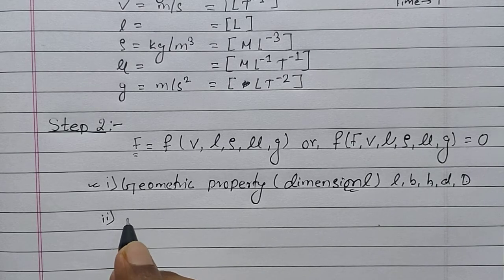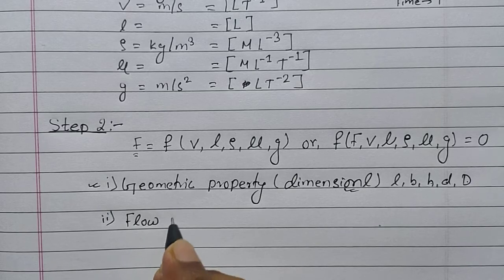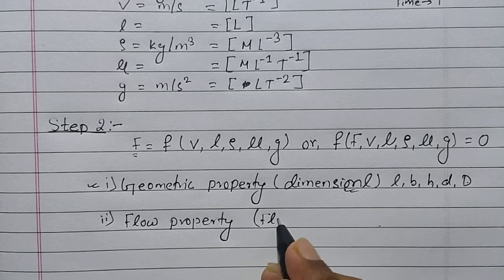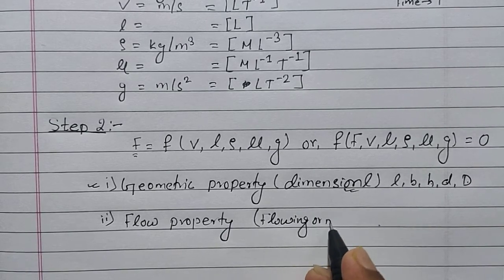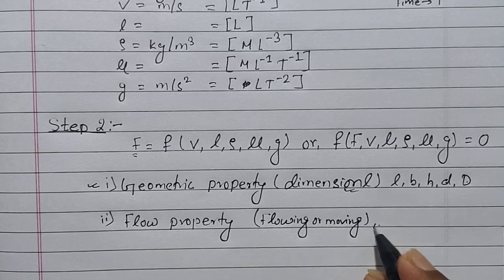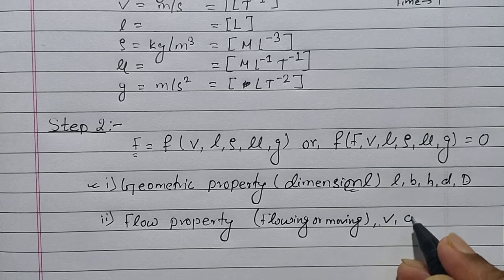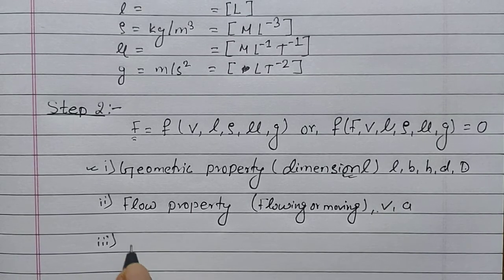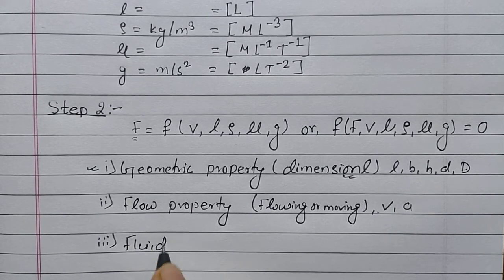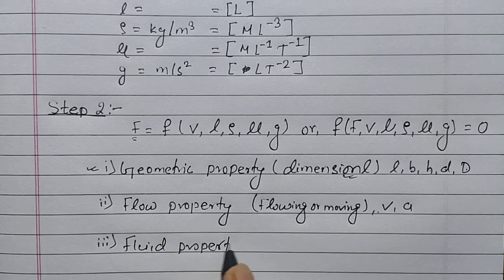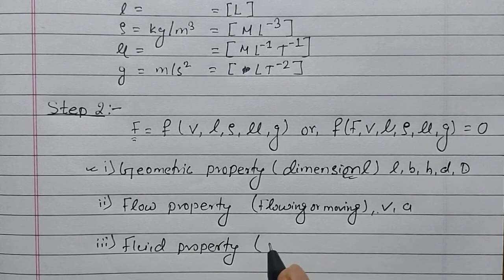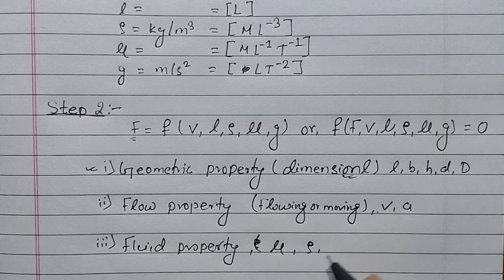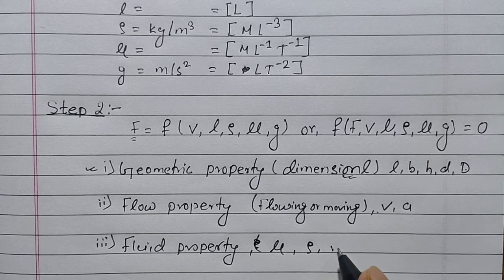The second repeating variable is based on flow property, meaning it is mainly related to the flowing or moving nature — it can be velocity or acceleration. The third repeating variable is based on fluid property, which is mainly denoted by dynamic viscosity μ, density ρ, or kinematic viscosity ν.